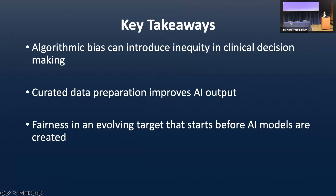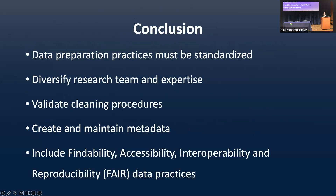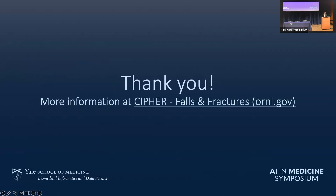The key takeaways are: algorithmic bias can introduce inequity in clinical decision making — if we have incorrect representation, we can make incorrect conclusions. Curated data preparation improves AI output. Fairness is an evolving target that starts before AI models are even created. Data preparation practices must be standardized. Diversifying research teams and expertise always helps bring in different kinds of input. Validating cleaning procedures, creating and maintaining metadata, and including FAIR data practices — meaning findability, accessibility, interoperability, and reproducibility — all help achieve reduction in bias. More of our work is available on CIPHR, the Centralized Integrated Phenomics Resource for the Department of Veterans Affairs.